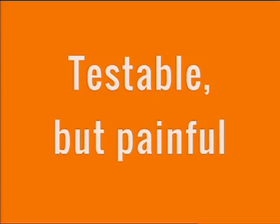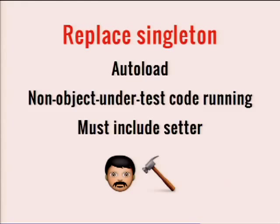So that passes, and it's testable, but it's painful. You do get autoload, but you also have non-object-under-test code running. The term you'll see — object under test, system under test — is basically the thing you're testing, and you should be testing that and nothing else in a unit test. And if you do have this, you have to include a setter or else it just doesn't work.